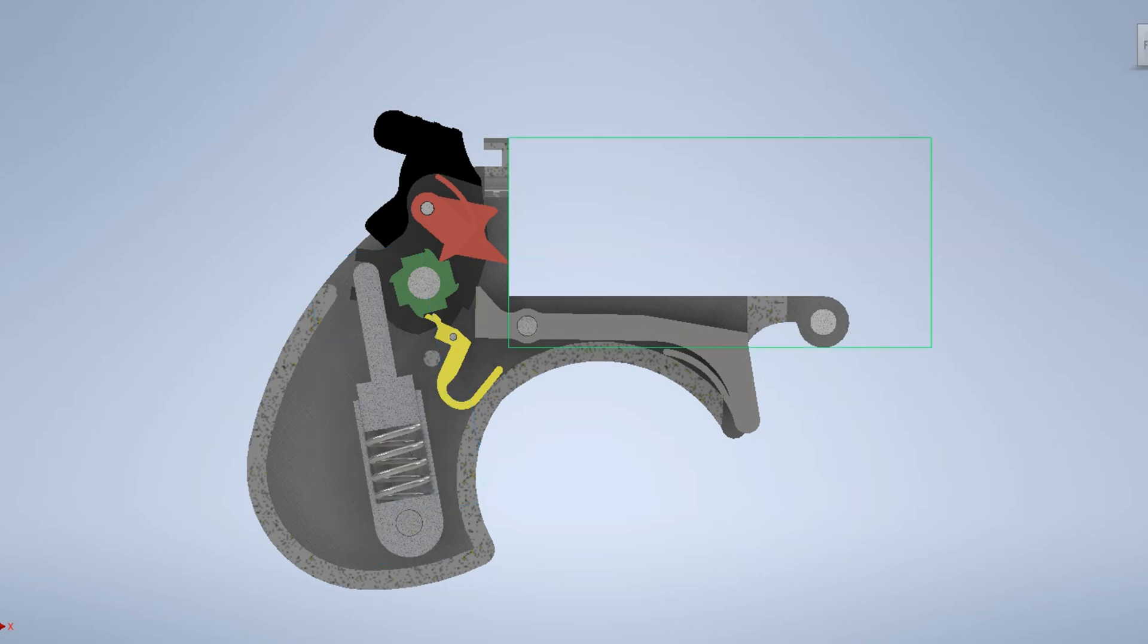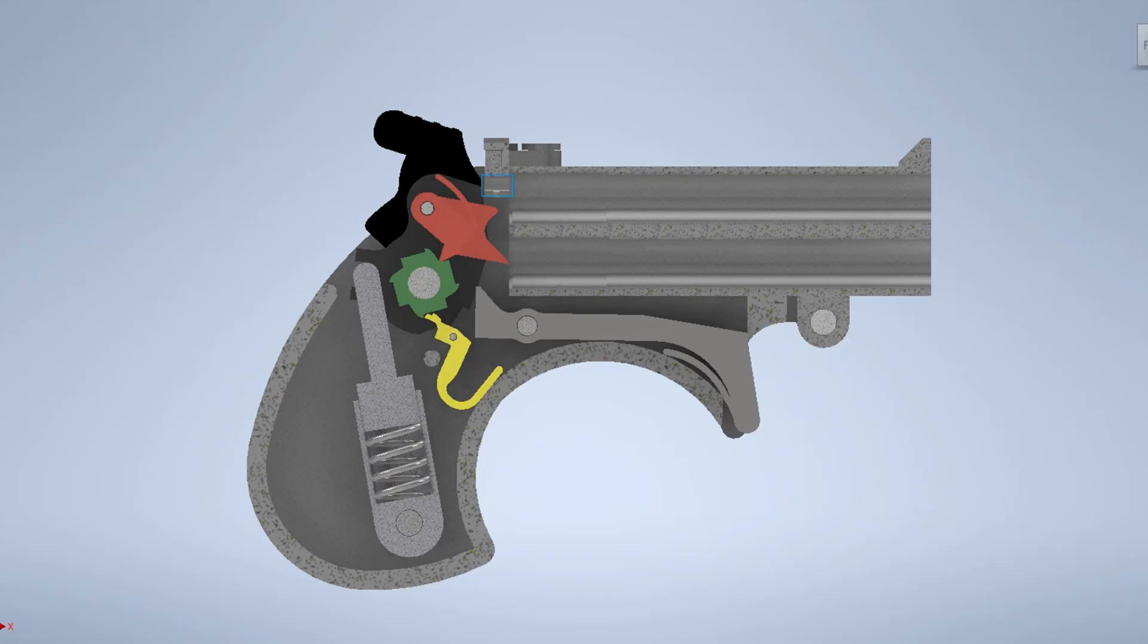The barrel uses a brake-action design, secured by a small latch on the top. The purple transfer pin redirects the force from the firing pin to the cartridge in the upper barrel.